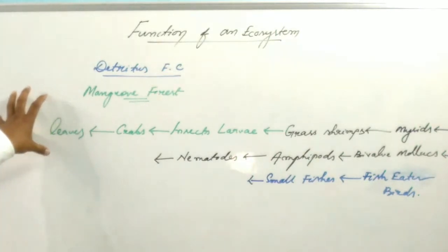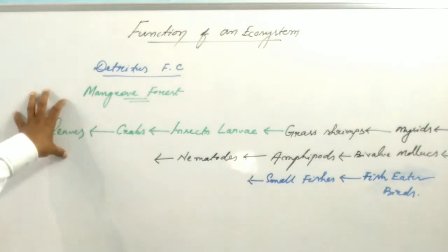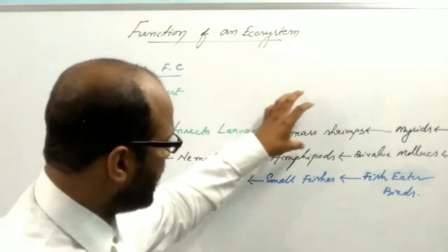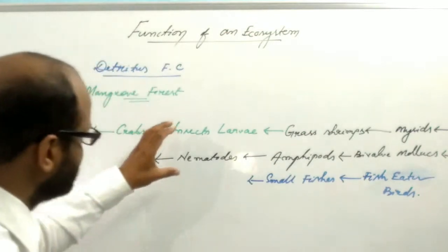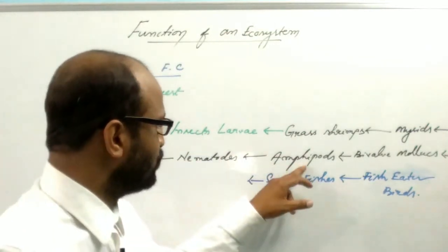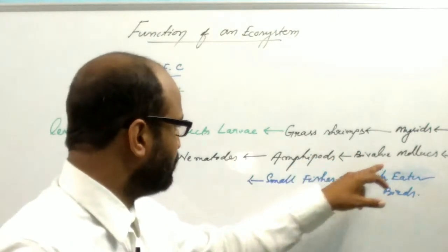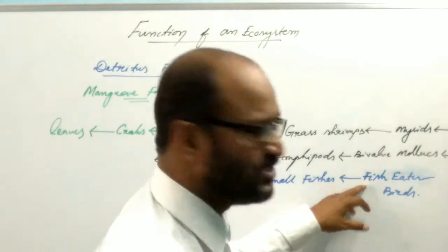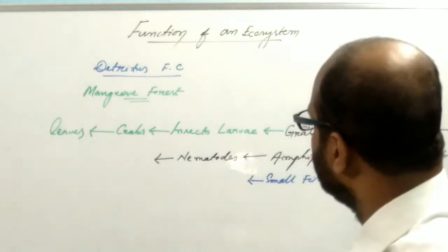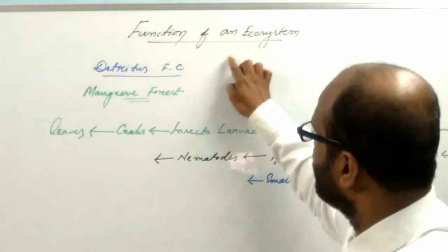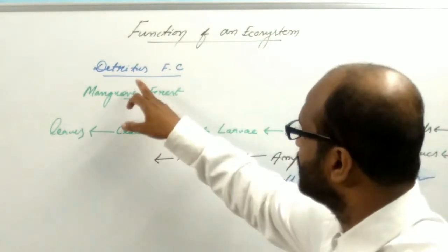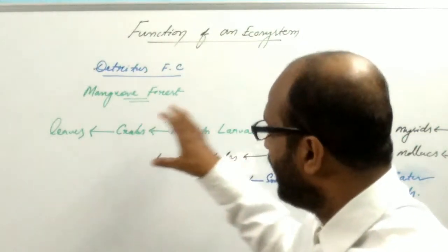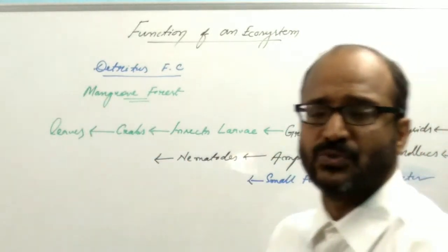The bivalve molluscs become the food of the small fishes, and small fishes become the food of the big fishes. The big fishes or small fishes may be the food of the fish-eater birds. This is the longest food chain in the mangrove forest, starting from the fallen or rotten leaves of the mangrove. This food chain is known as the detritus food chain — it starts from the detritus organic substance and less depends on the influx of solar energy.